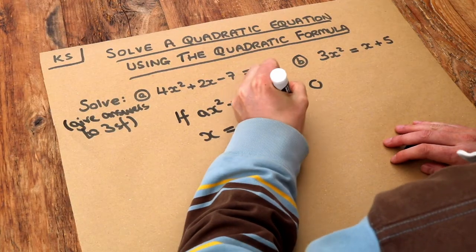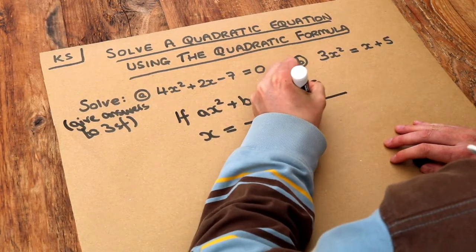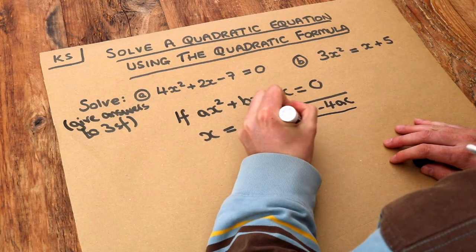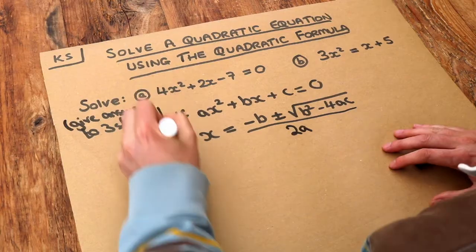So minus b plus or minus the square root of b squared minus 4ac over 2a. Now this looks very intimidating but ultimately we're just substituting numbers into a formula.